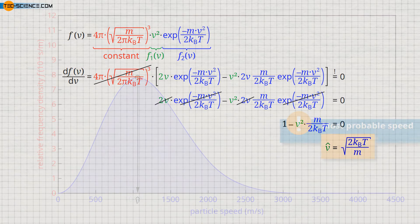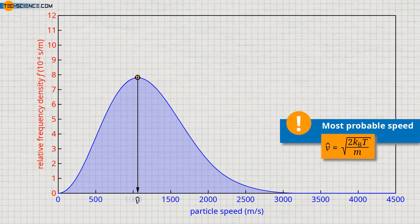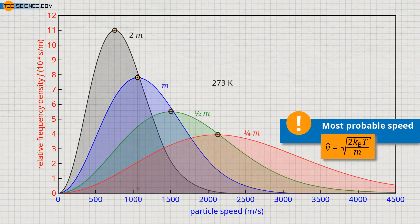It turns out that the most probable speed depends not only on the temperature, but also on the mass of the gas molecules. The figure shows the influence of the mass on the distribution function, and thus on the most probable speed at constant temperature. For heavier gas molecules, the most probable speed will be lower than for lighter molecules despite the same temperature. For example, a molecular mass four times as large means only half as large a most probable speed.